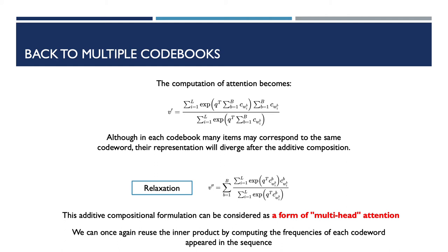To tackle this problem, we propose to relax the attention operation. We can split the computation, perform the attention in each code book separately, and then take the sum. So the computation goes from the equation above to the equation below. We can consider this additive compositional formulation as a sort of multi-head attention, where each attention head corresponds with a single code book. Since different code books form different latent space, this reduction in fact aggregates information from different representational subspace of the items using independent attention weights. Now, once again, we can reuse the inner product by computing the frequencies of each code word appeared in the sequence, and of course, in each code book separately.